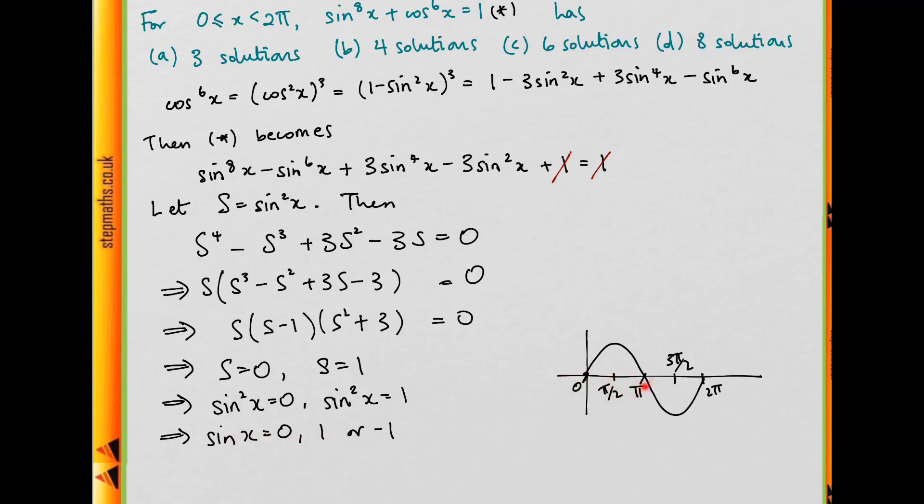So that'll be at 0, π over 2, π, 3π over 2, and we're not including the 2π here, so we have 4 solutions, and the answer is b.